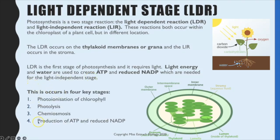The key reactions that happen here are: first, photo ionisation of chlorophyll, where the chlorophyll is absorbing light energy. The light energy absorbed by the chlorophyll is also used for the photolysis of water. And from those two stages, chemiosmosis can occur, which ultimately results in the production of ATP and reduced NADP.